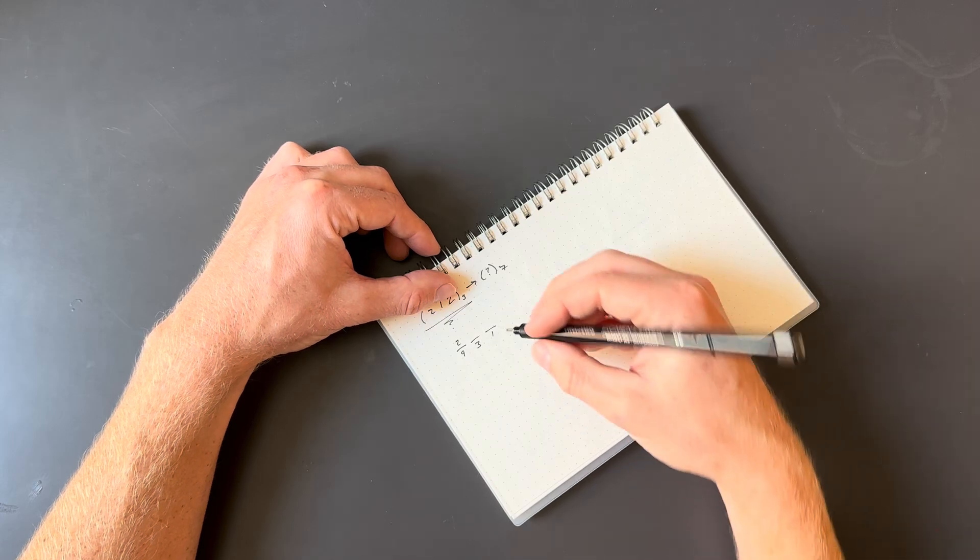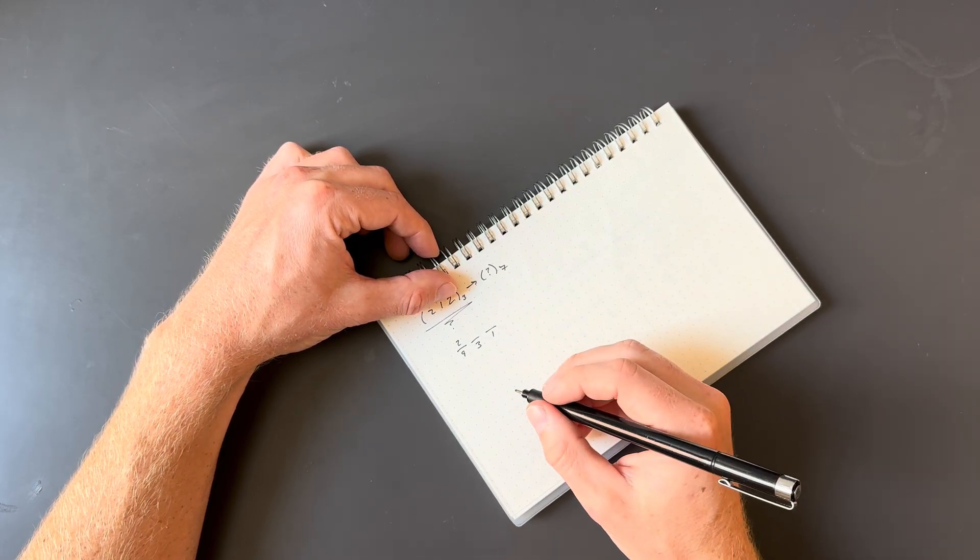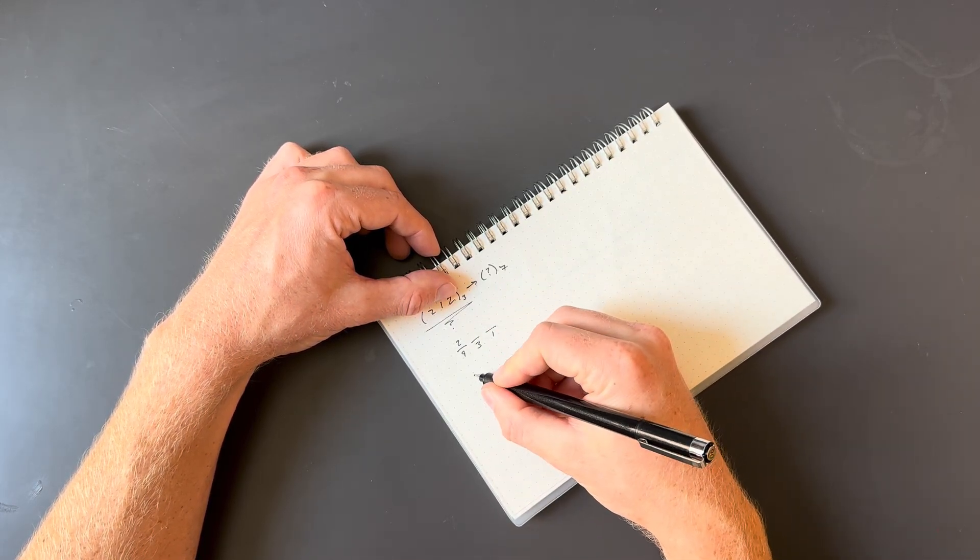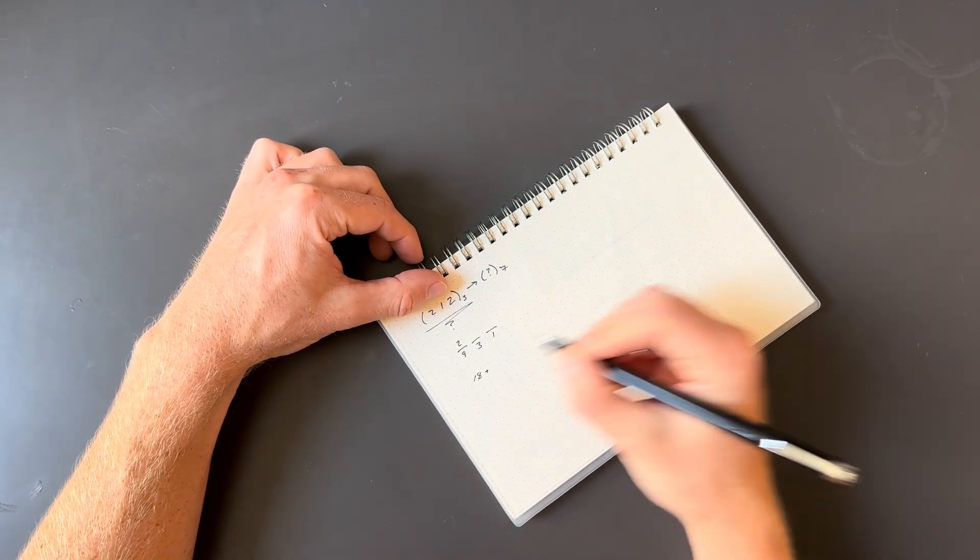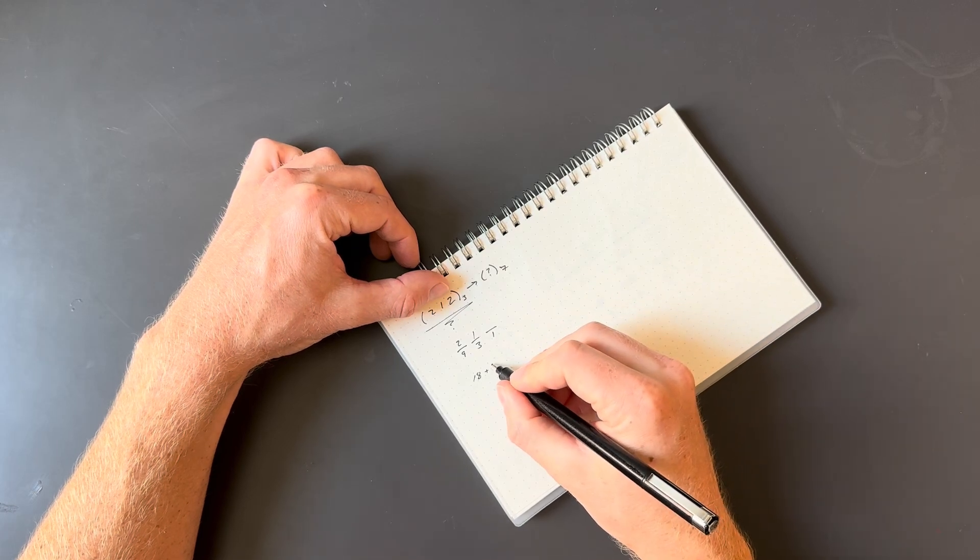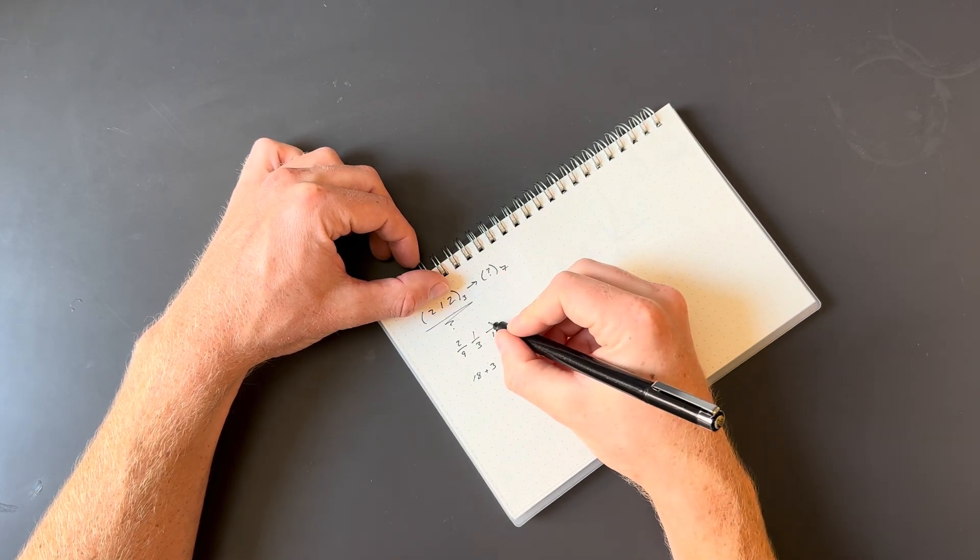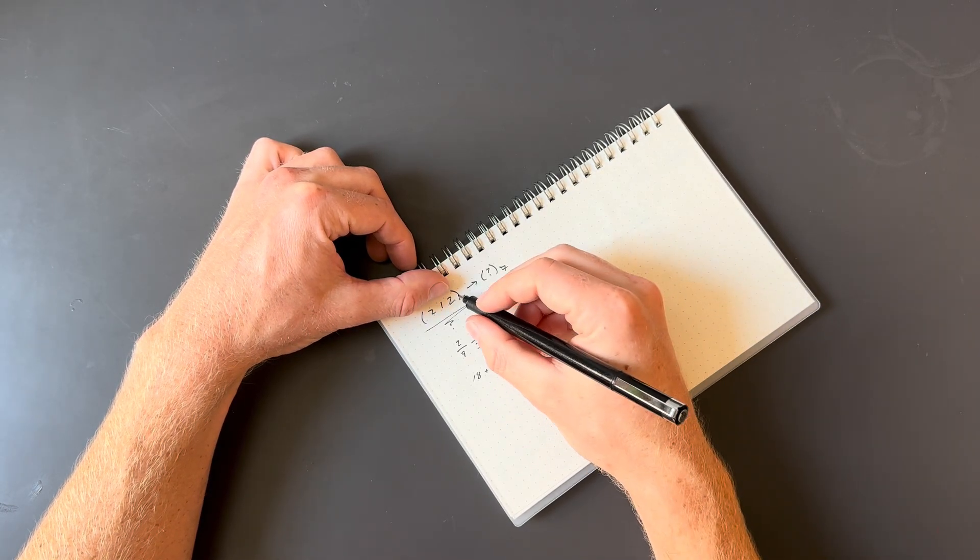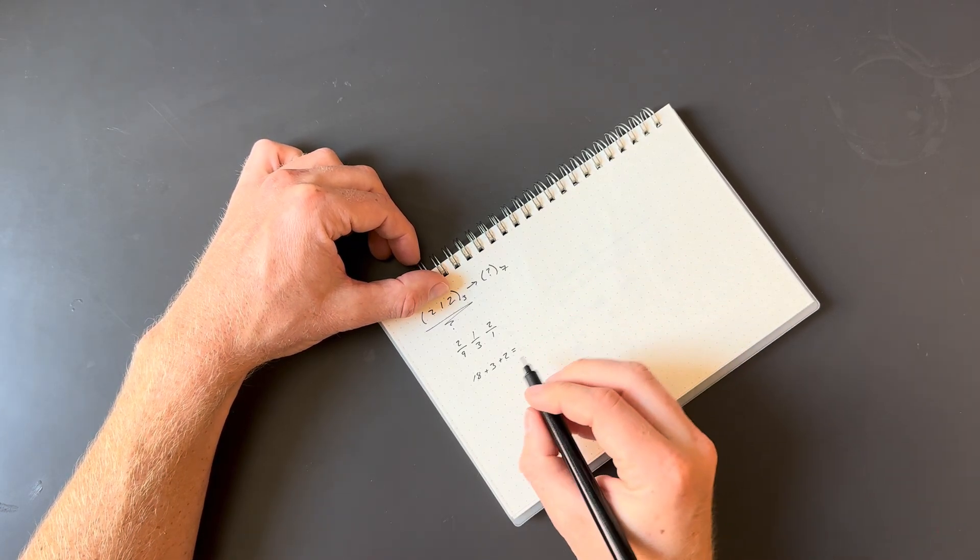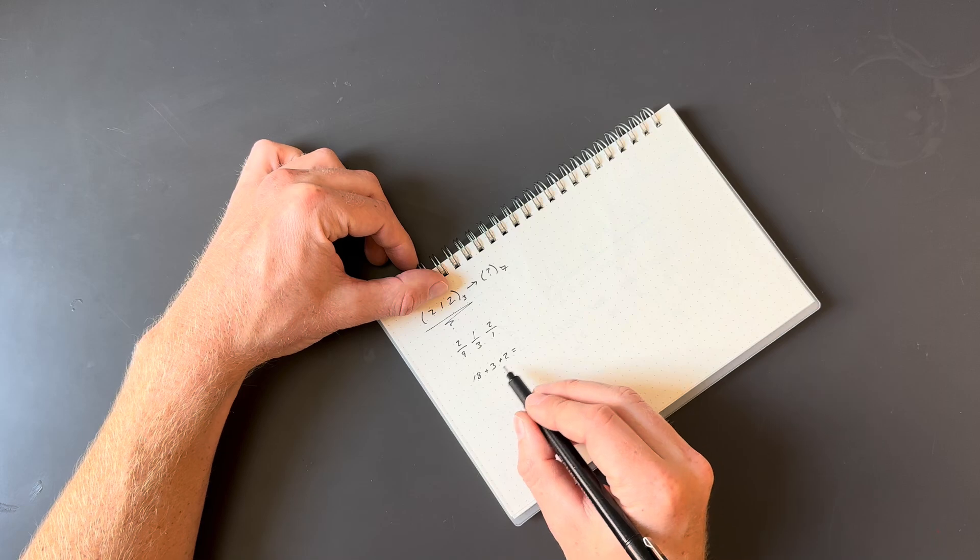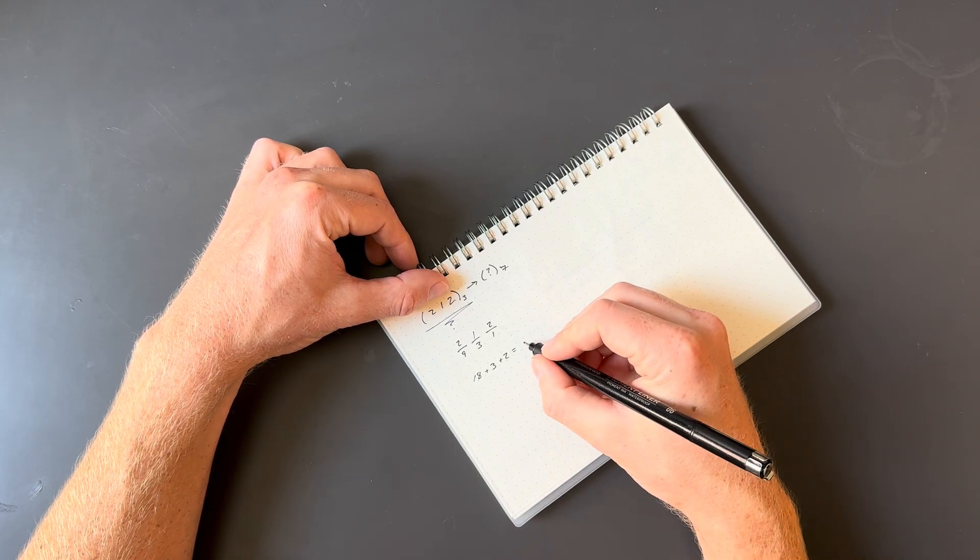So if we have a 2 in our 9s place, that's going to result in 18 as a quantity being a part of our final number. Our next digit is a 1 in the 3s place, so we have 3. And then we have a 2 in the 1s place, so we're going to add 2 more. So our total quantity being represented here is going to be 18 plus 3 plus 2, or 23.